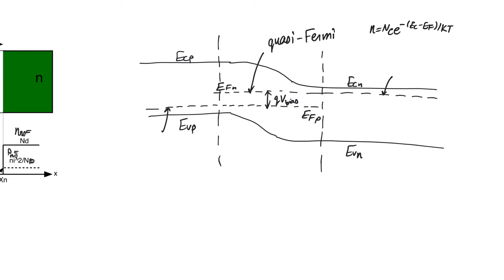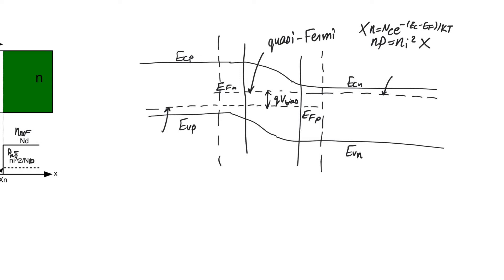This indicates that if one increases, the other decreases, which leads to the Mass Action Law: N times P equals NI squared. However, N times P equals NI squared is valid only in thermal equilibrium. In thermal non-equilibrium, the Mass Action Law is not applicable, and these equations for charge concentration are also not applicable. This is exactly what's happening in the depletion region and, more importantly, at the interfaces just across the interface in the neutral zones.